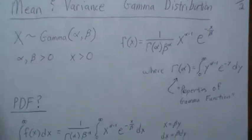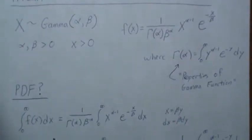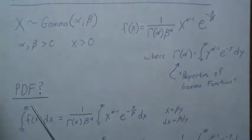First of all we want to know is it a PDF, so let's check that. We're going to integrate this over the domain, which is this. Now we can pull these out because they're constants.